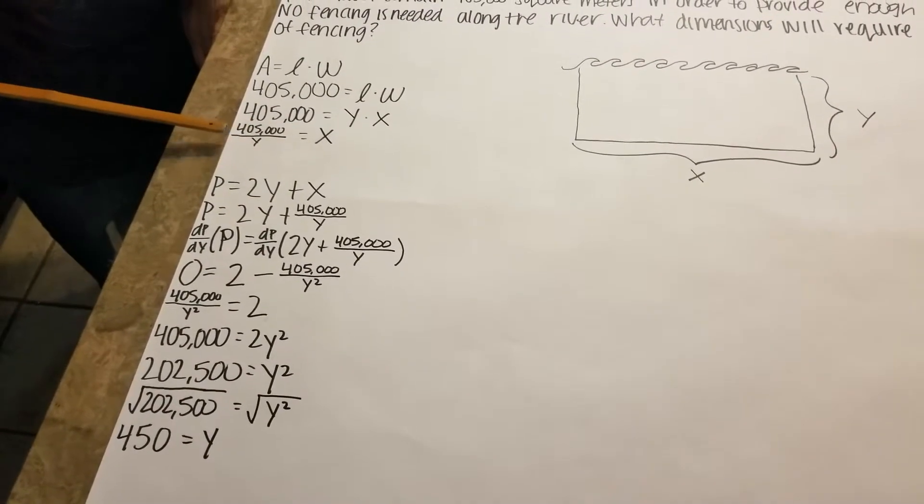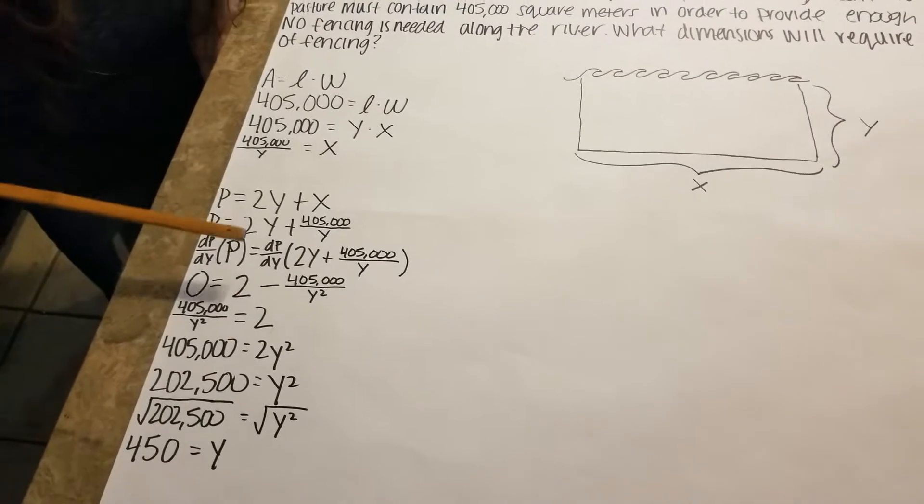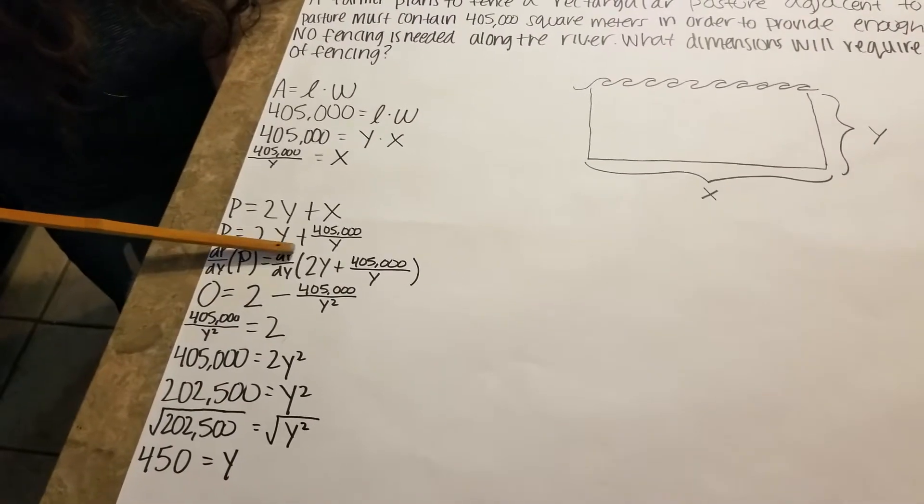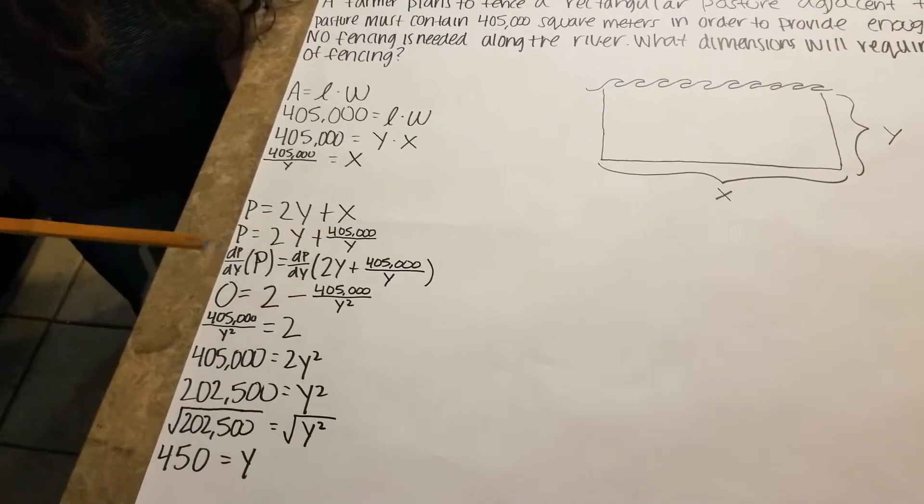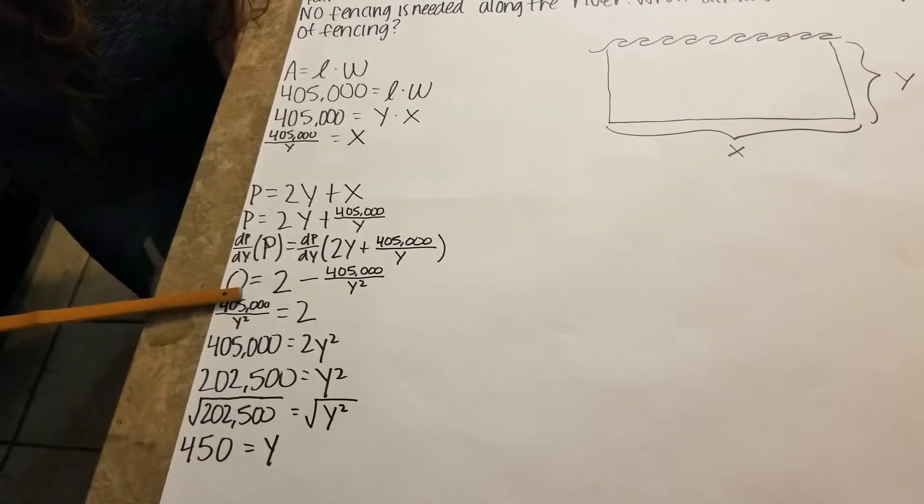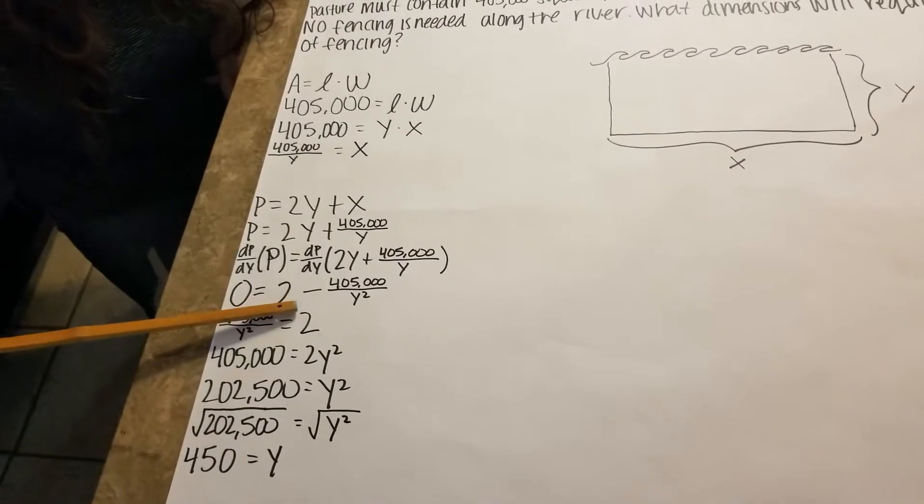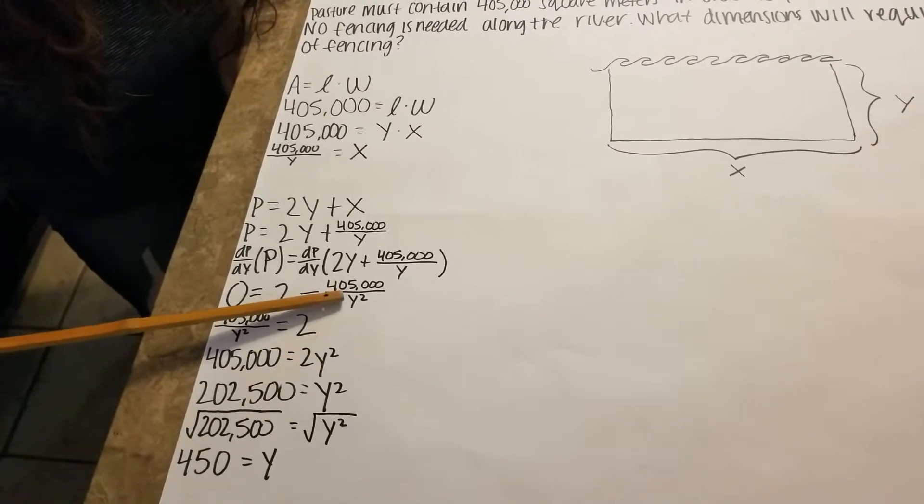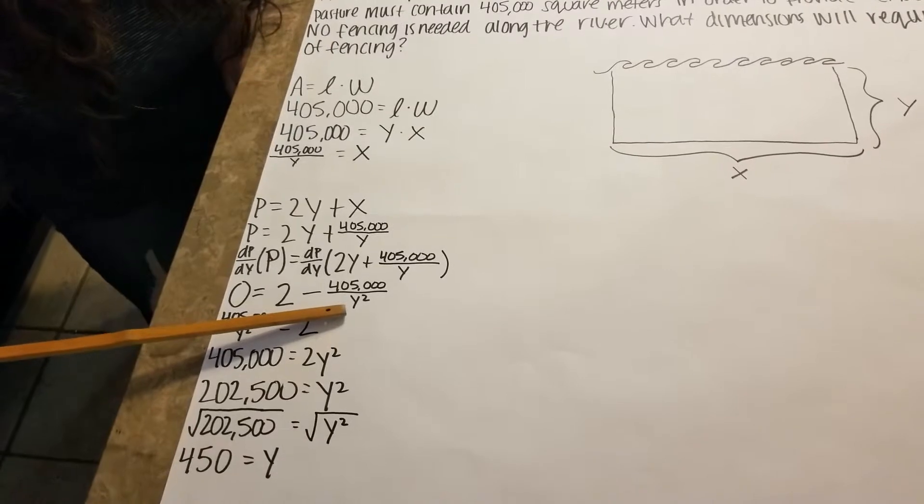When we plug in our value for X here, we get P equals 2Y plus 405,000 over Y. When we take the derivative of that, we will get 0 equals 2 minus 405,000 over Y squared.